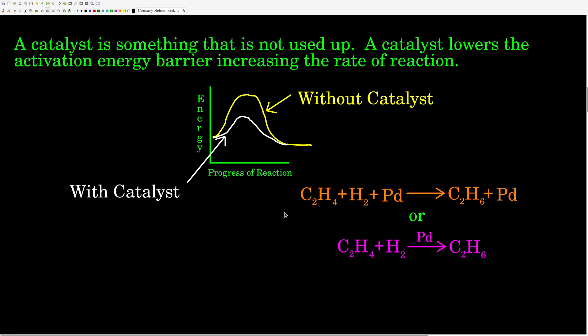For example, the hydrogenation of ethylene, C2H4. If you add H2, we end up with C2H6. A catalyst speeds up the reaction by lowering the activation barrier, but it is not used up in the reaction. That's really nice because you don't need that much of it since it always gets reformed. We might write this as ethene plus hydrogen plus palladium forming ethane plus palladium still there. Another way of writing this is to put the palladium on top of the arrow.